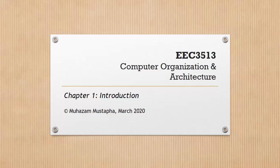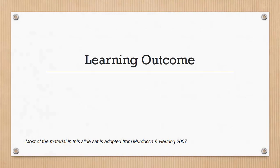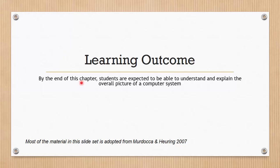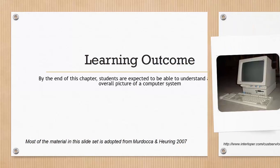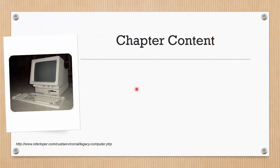So let us begin with the first chapter or introduction. Learning Outcome: At the end of this chapter, you are expected to be able to understand and explain the overall picture of a computing system. Chapter content, we will start with a brief history of computing, then a brief overview of von Neumann and System Bus model which is the overall computing system that we have today.